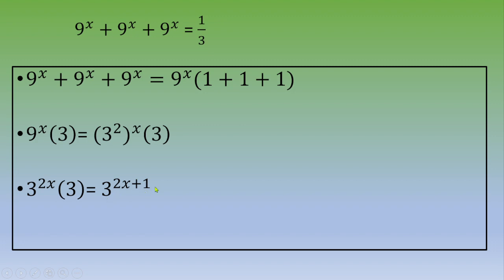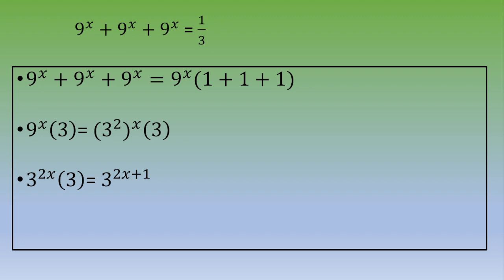So to recap, 9^x + 9^x + 9^x equals 3^(2x+1). Let's plug that into this equation. Instead of writing 1/3, we can write 3^(-1).